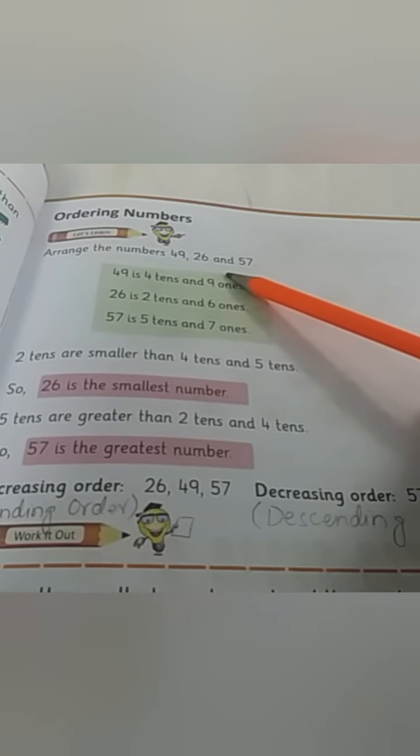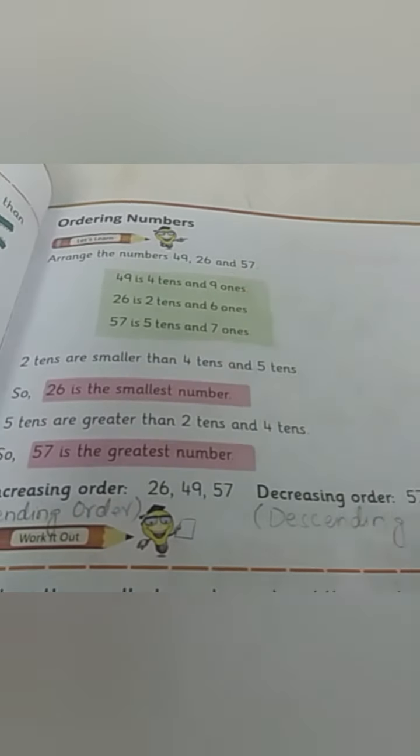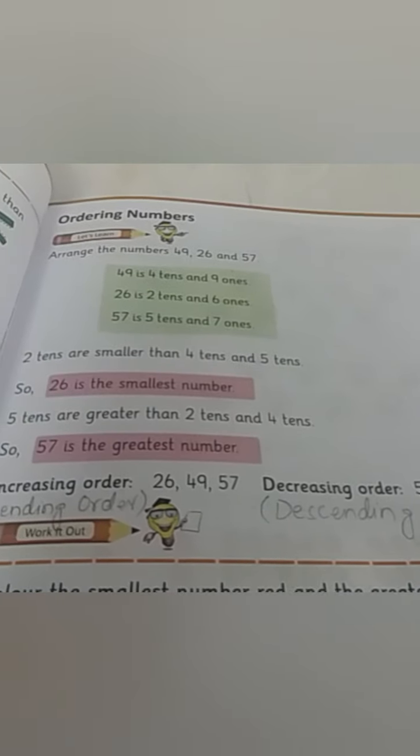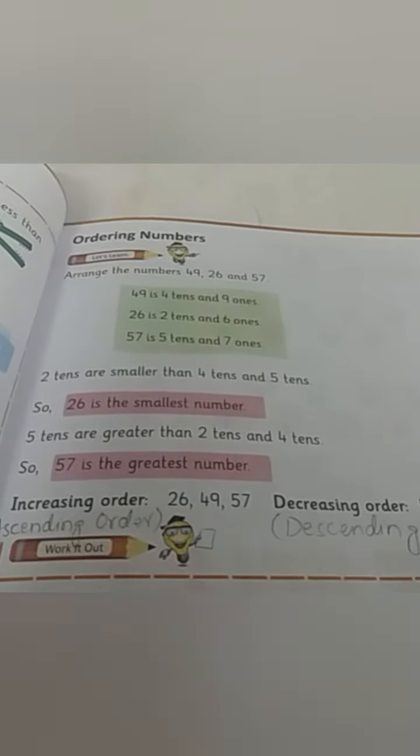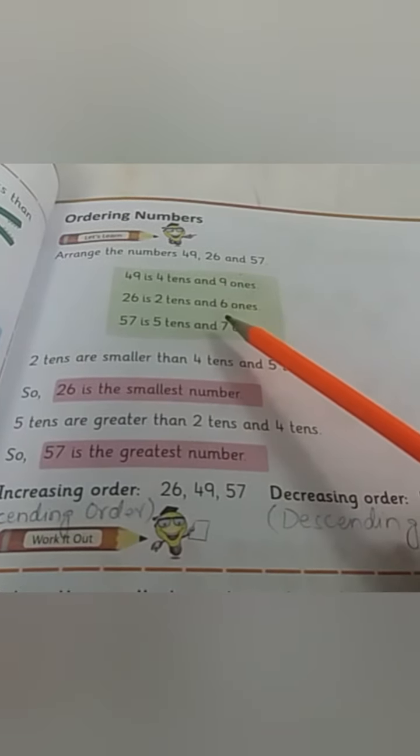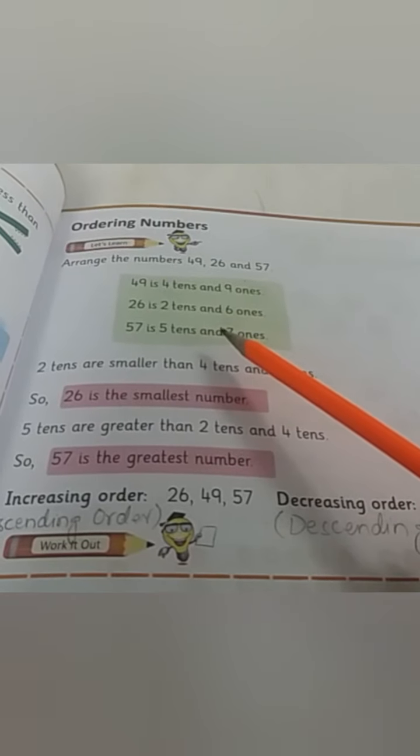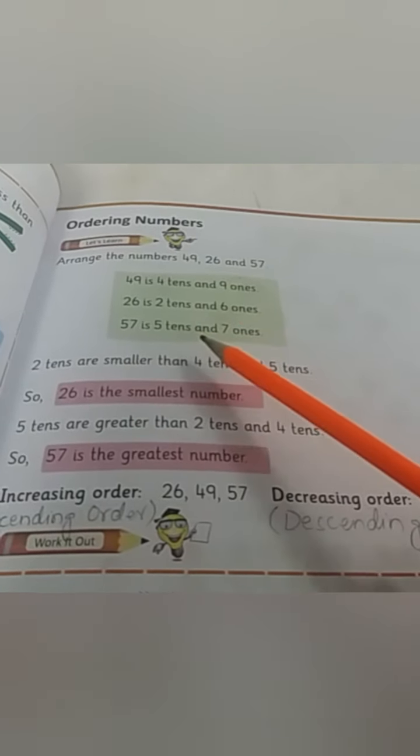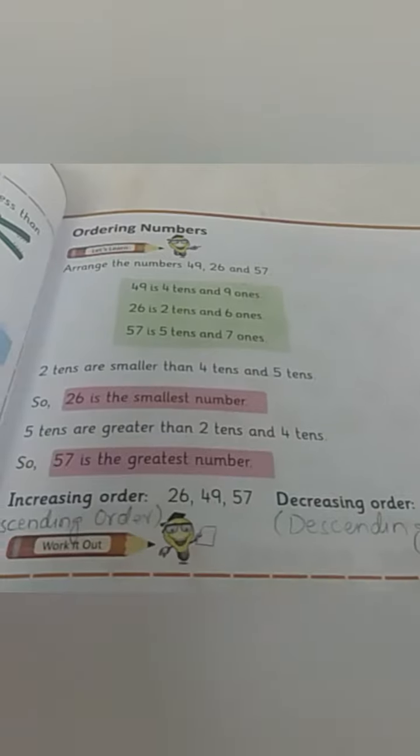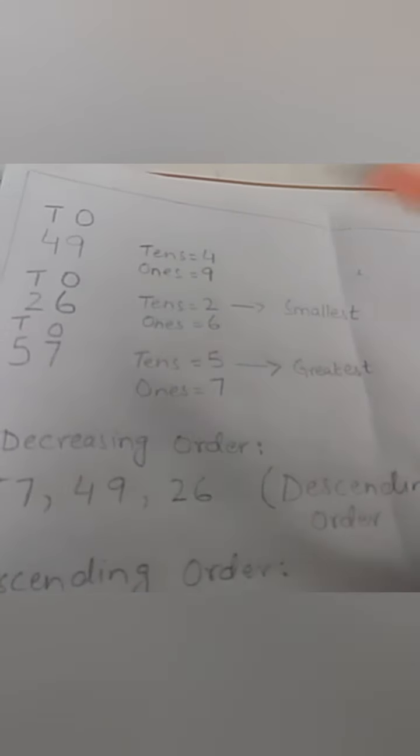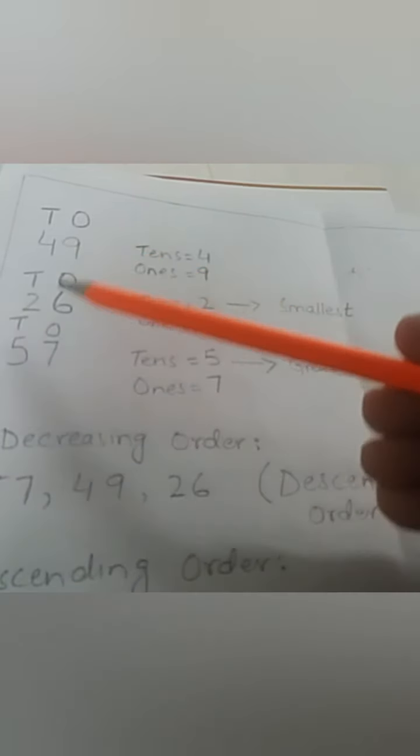First of all, we will find out the smallest and the biggest or the largest number in these three numbers. Which one is the biggest and which one is the smallest? How do we know that? We will compare ones and tens of these three numbers, and then we will see which one is the smallest and which one is the greatest number.